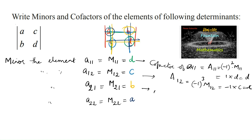And the next one, A21 — second row, first column. We can write (-1)^(2+1) = (-1)^3, and M21, which is equal to (-1) into M21. M21 is B, so A21 equals negative B.